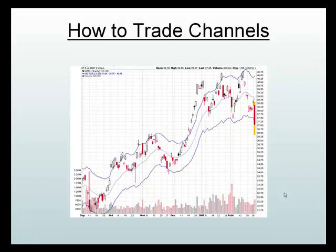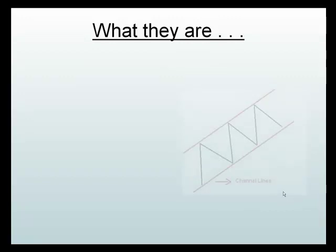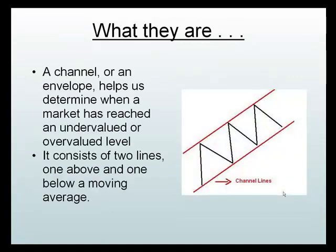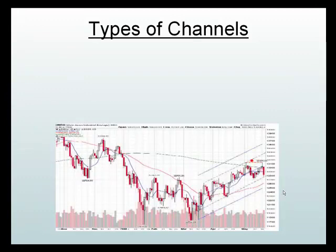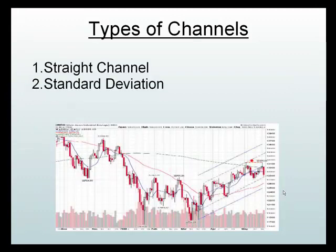This is part two in our series on how to trade channels. In part one we talked about what channels are and what we use them for — basically they help us determine overvalued and undervalued points, they tell us points of support and resistance, and they tend to work with a moving average. We also covered the two types of channels: straight line channels, which we covered in the first video, and standard deviation channels, which is what we're going to focus on here.